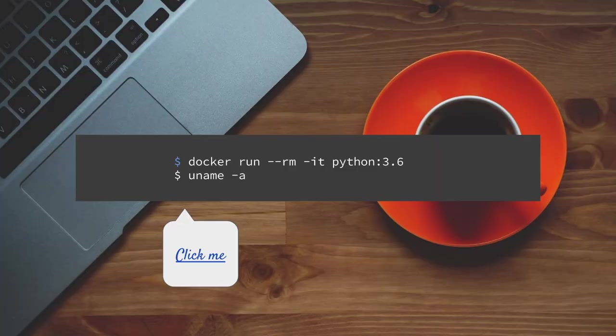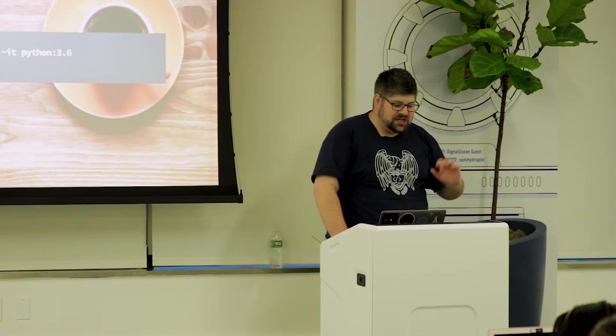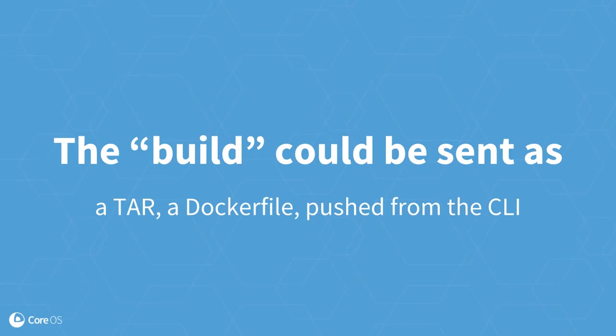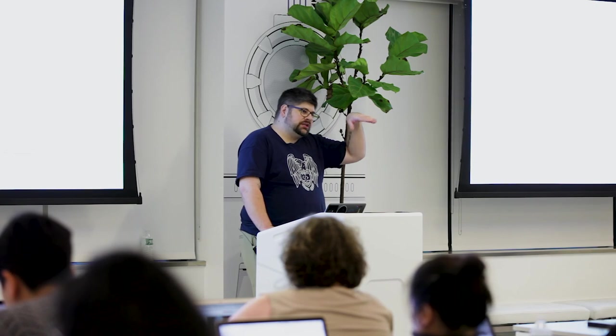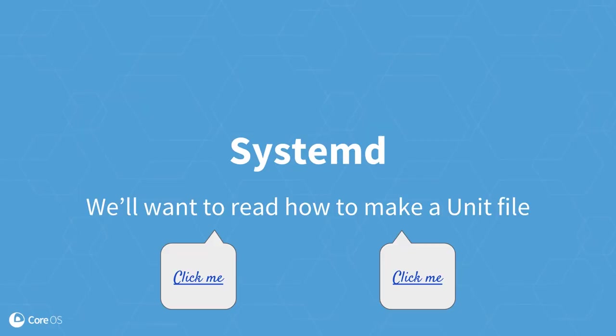The uname command just spits out some information about your Linux system. You go inside the container and the container identifies itself when you run uname -a. Now that we have this built image, we could send it as a tar, export it using the Docker command, create something called a Dockerfile — which is the ideal way — or push it from the command line interface. That's actually linked in the joshix/caddy docs, which mention how to create a Dockerfile in addition to how to just run it. Next step would be to create a systemd unit file to run this as a long-term running thing on our web server.